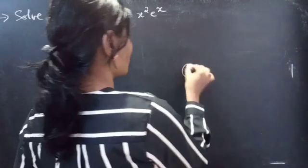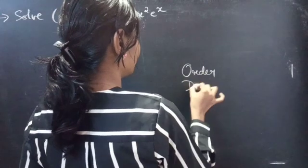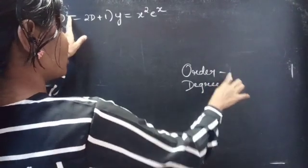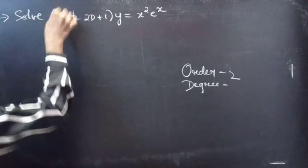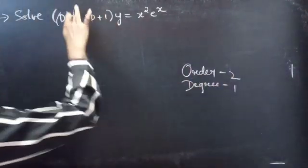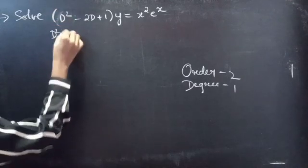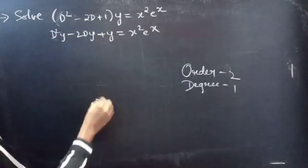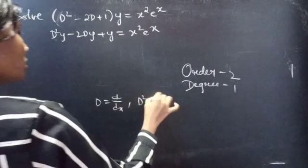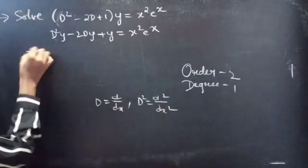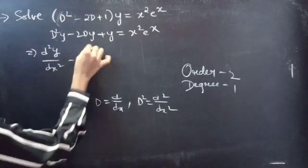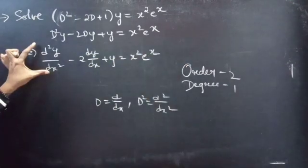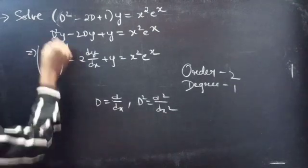Firstly, let's find out the order and degree of the given differential equation. Identify the highest derivative here — d² is the highest derivative, so our order will be 2. The highest power of the highest derivative is 1, so the degree is 1. We can write the given differential equation as d²y/dx² − 2(dy/dx) + y = x²eˣ. Here d²y/dx² is the highest derivative, so order is 2 and degree is 1.